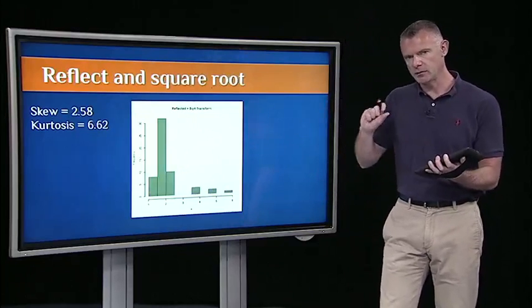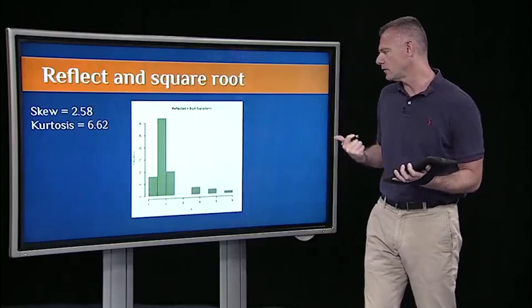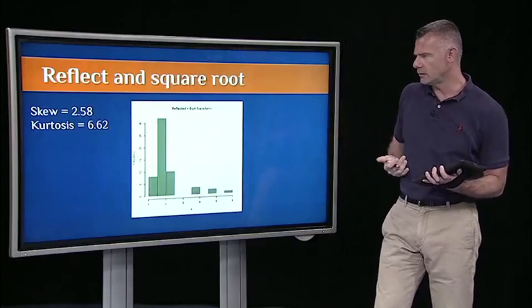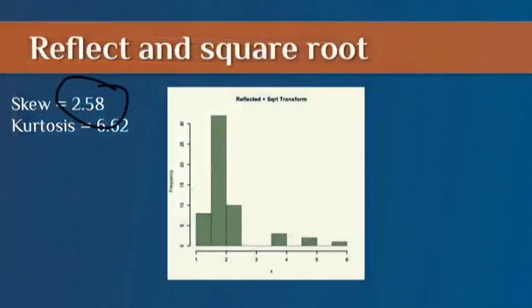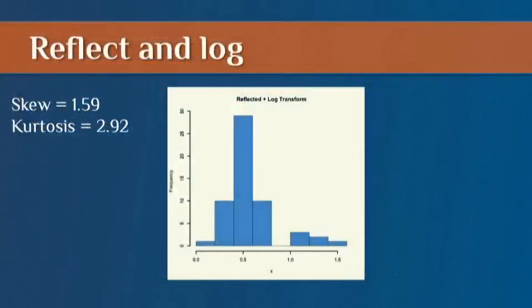I did the reflection and a square root transformation, and you'll see you got a skew value now below 3. If I do reflect and log, that does even better. That brings me down to a skew value of 1.59.